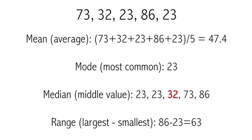If you have an odd number of elements, you can figure out which element is the median by dividing the count by 2 and rounding it up. So with 5 elements, we divide by 2 to get 2.5, round up to 3 — so the third element is the median.